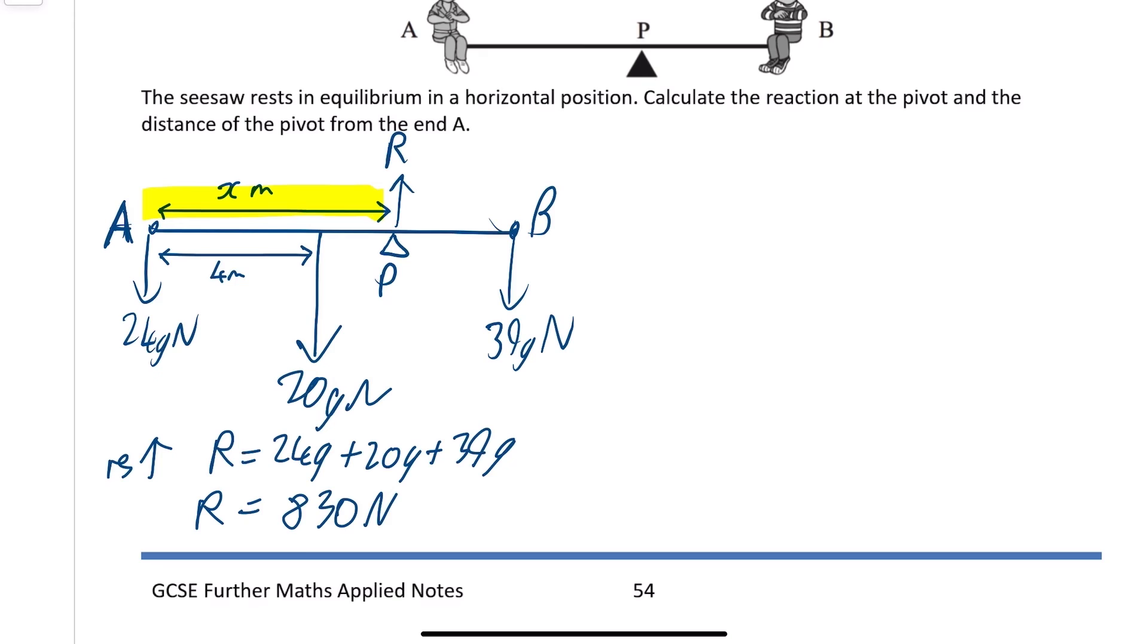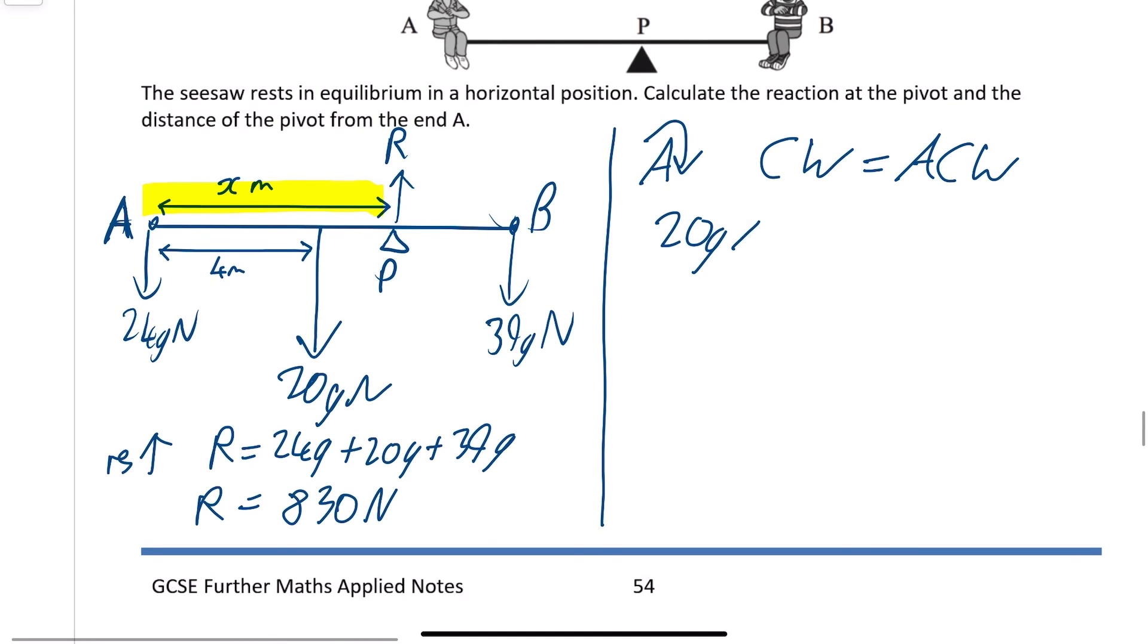We will come back to this in a second, no doubt. For the next bit and the last bit in this video, we have to just find the distance of X. So take moments about A and just say your clockwise is equal to your anti-clockwise moment. The thing about moments is your clockwise moment will always be equal to your anti-clockwise moment in the purpose of these questions. So clockwise from A, you will have 20g and it is 4 meters away. You will also have that 39g and it's 8 meters away.